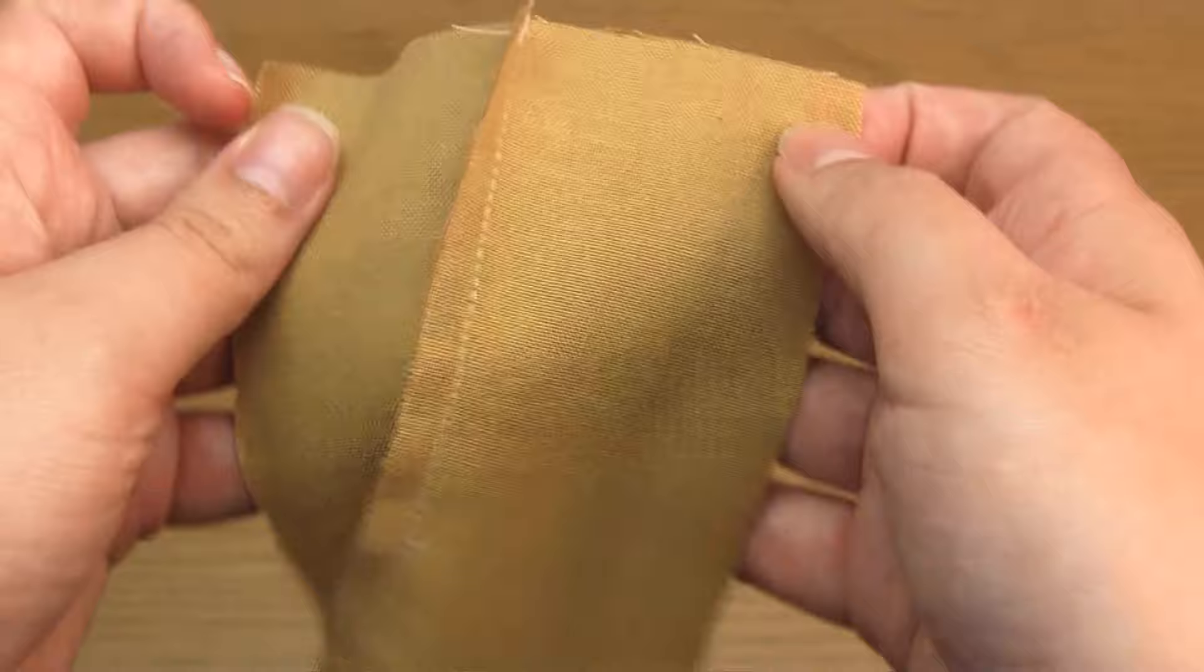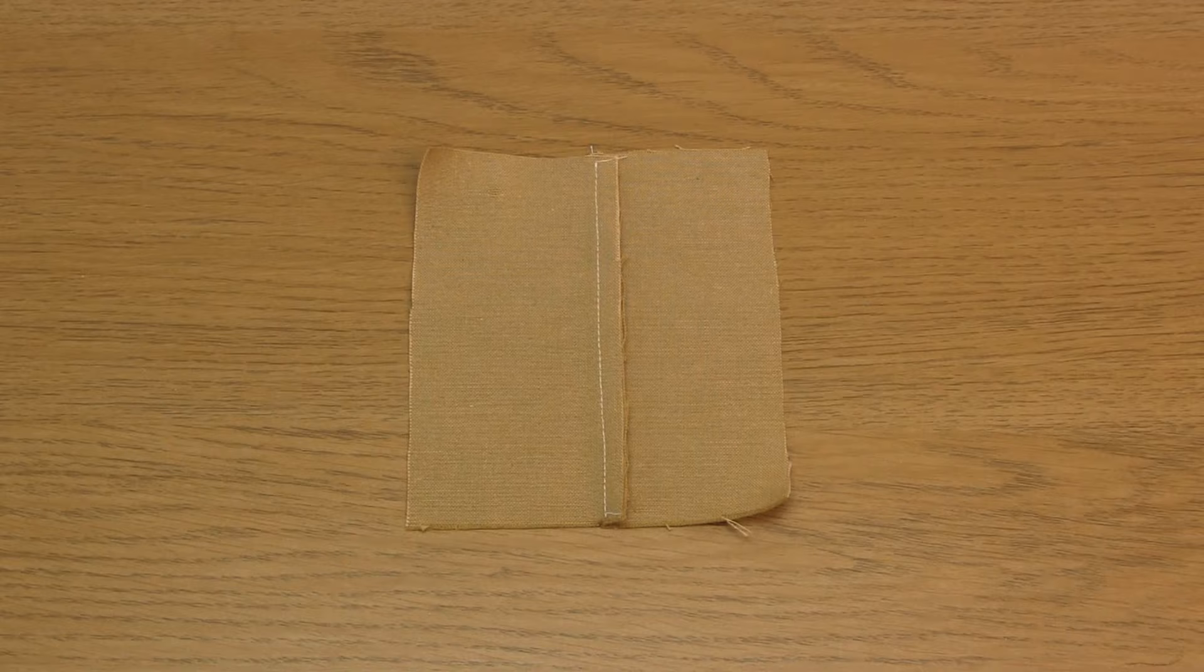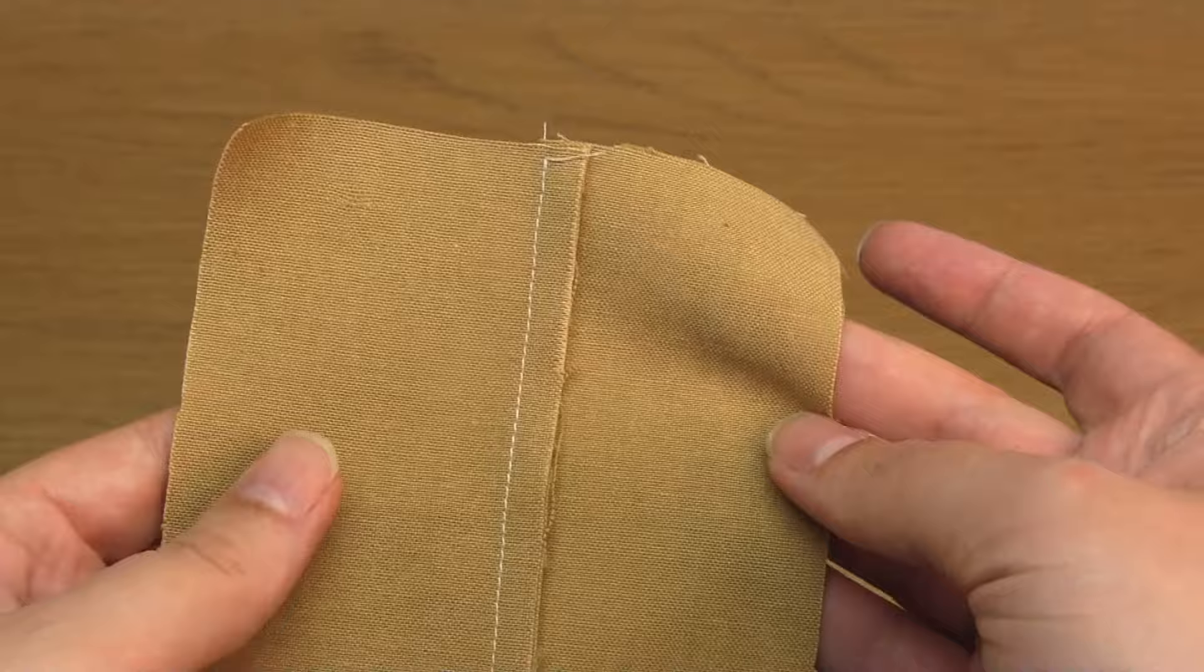And then all the rest of the steps are exactly the same as method one. So open out the fabric and press the seam allowance to one side. Then fold the fabric right sides together and press the seam again.